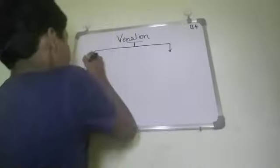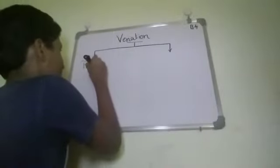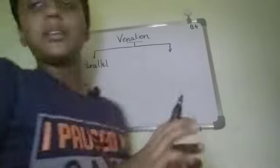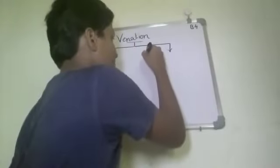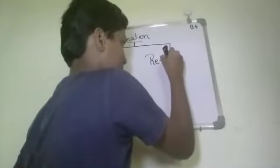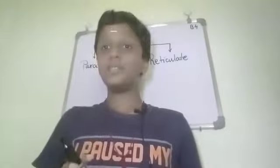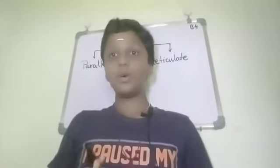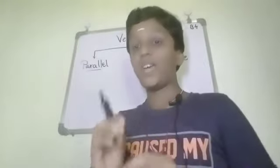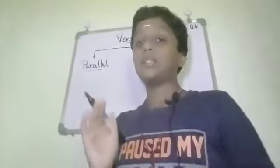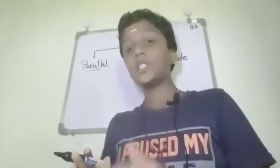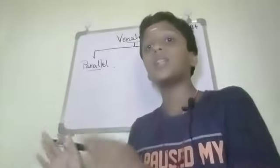The first type is parallel venation, and the next type is reticulate venation. First, let us look into parallel venation. In parallel venation, the veins are arranged parallel to each other.